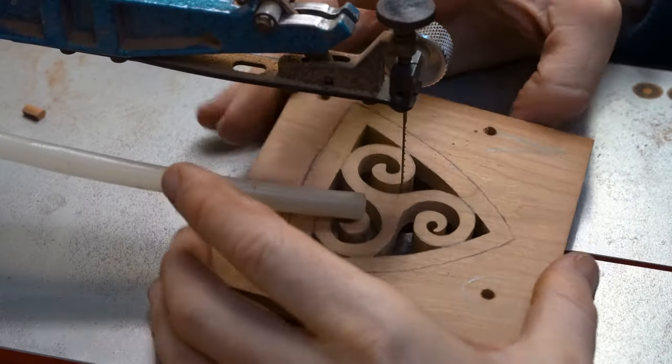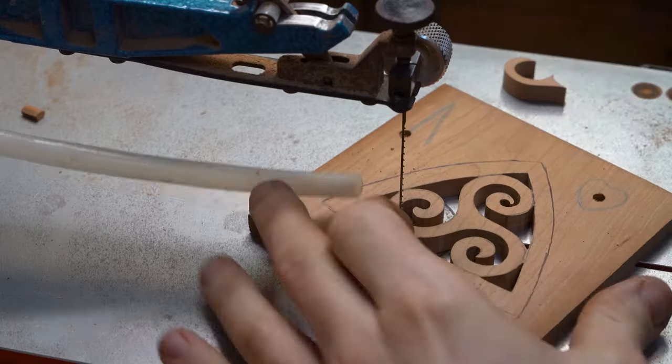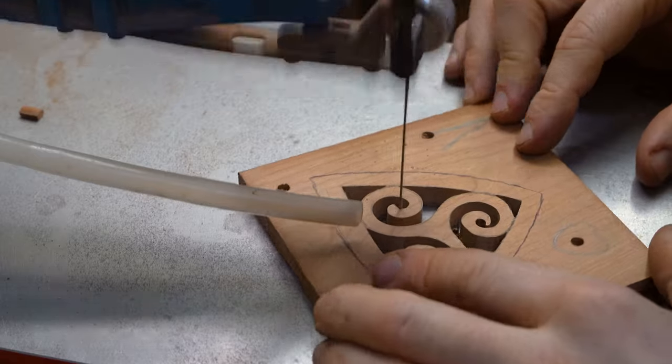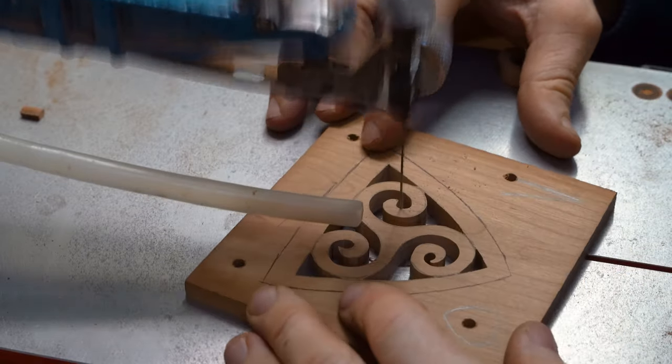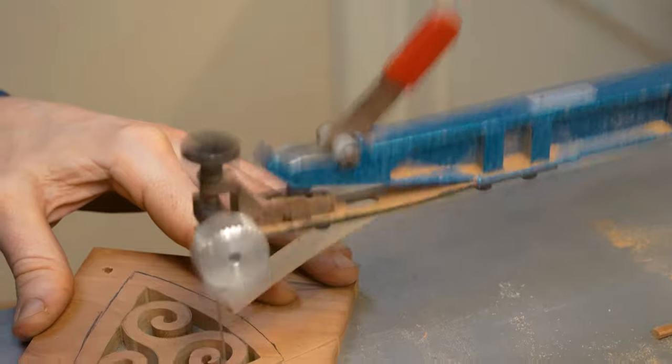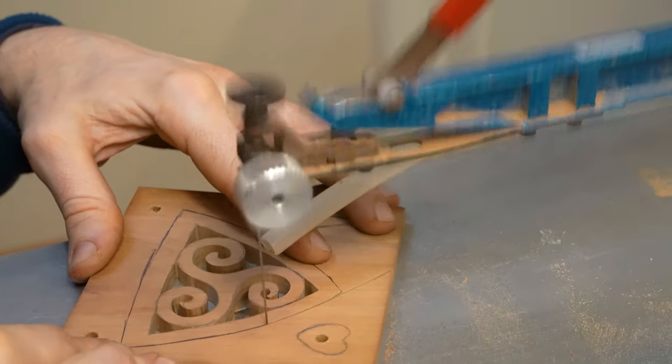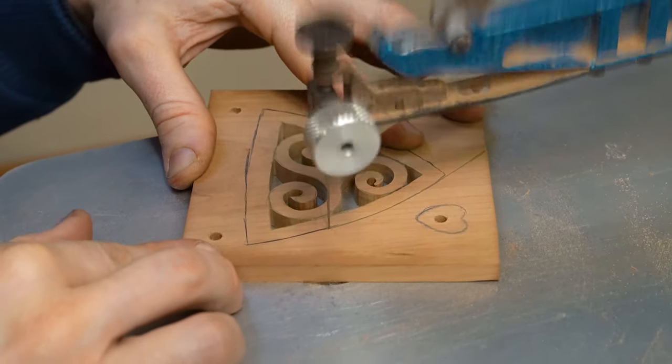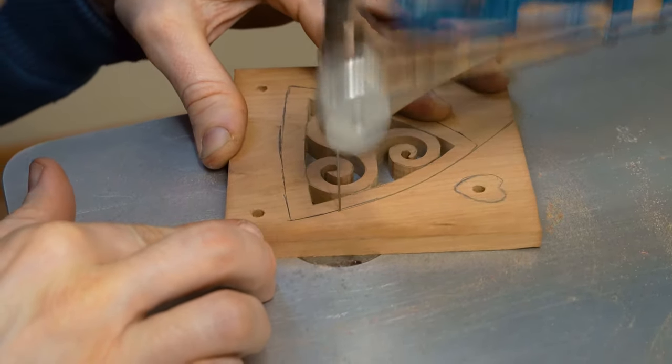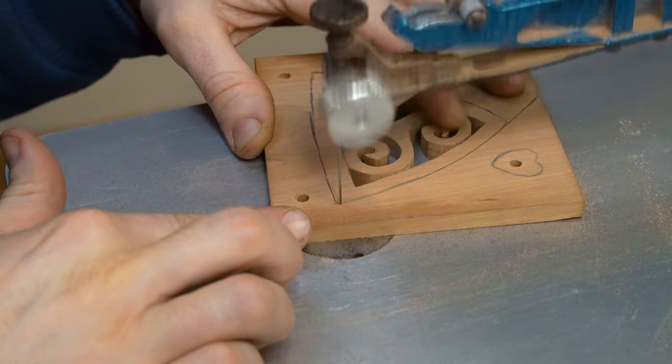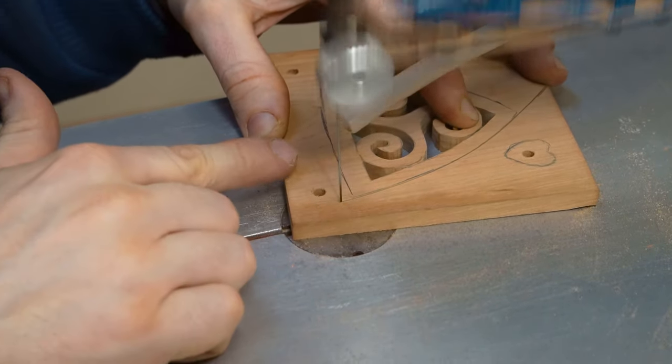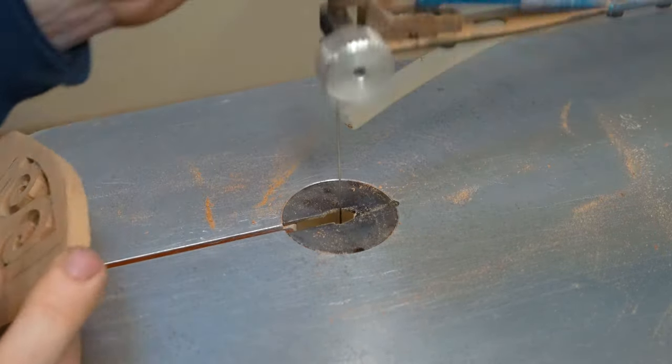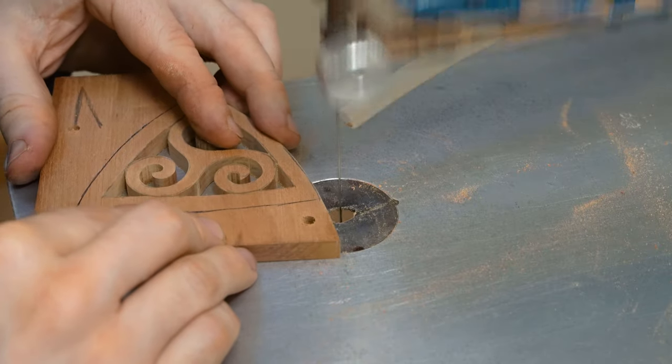We also use a technique where we drill that hole for our pierce work and we might just cut out a little bit of wood. So we'll make that hole a little bit larger by cutting in one direction and taking the block of wood away. We might then cut in a different direction and take another little block away. So basically with this technique, you don't have to cut all of your pierce work in one go.